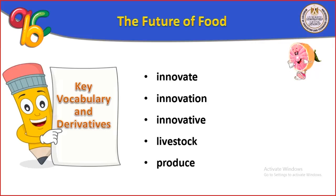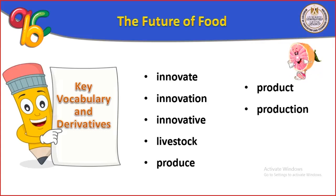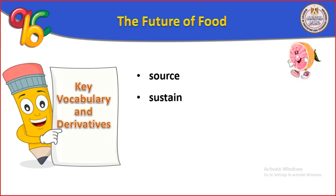Produce means ينتج (to produce). Product means منتج (product). Production means إنتاج (production). Productive means منتج (productive). Seaweed means أعشاب بحرية (seaweed). Source means مصدر (source). Sustain means مستمر (sustainable).